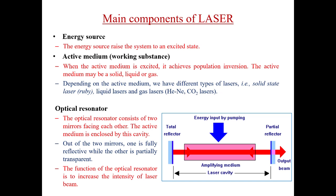The main components of a laser are: first, the energy source, which is required to raise the system to an excited state. Second, the active medium or working substance — when excited by the energy source, it achieves population inversion. The active material may be solid, liquid, or gas, giving rise to different types of lasers: solid-state laser, liquid laser, or gas laser depending on the active medium.